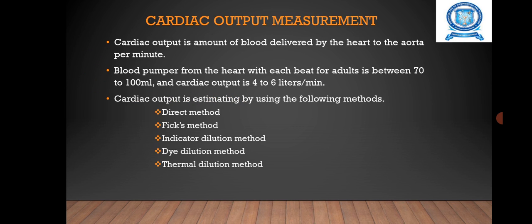Cardiac output measurement is the amount of blood delivered by the heart to the aorta per minute. It is also a major determinant of oxygen delivered to the tissues. When the supply of blood from the heart is unable to meet the demand, the blood pumped from the heart with each beat for adults is between 70 to 100 ml and cardiac output is 4 to 6 liters per minute.